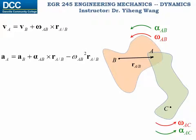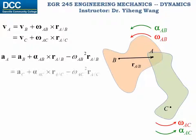During problem solving, of particular interest are points that belong to more than one rigid body — normally these are points of joints. For example, point A belongs to not only rigid body AB but also rigid body AC. Therefore, its linear velocity and linear acceleration can also be determined through rigid body AC, where r_A/C is the relative position of A with respect to reference point C. This provides the additional equations needed in order to solve the problem.